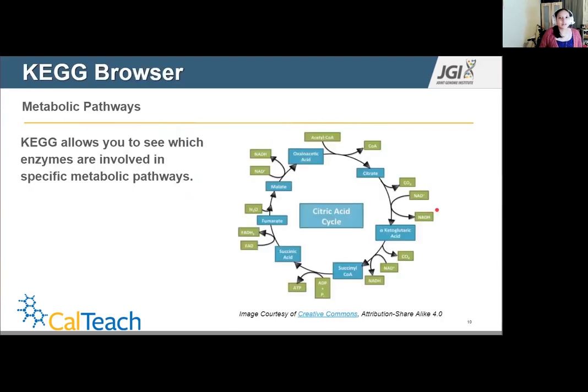This is where KEGG browser comes in. Galactose metabolism is an example of a metabolic pathway. Another example of a metabolic pathway is the citric acid cycle. And this is commonly taught in classrooms because it describes the chemical reactions required to release stored energy in cells. This is the backbone of why the mitochondria is the powerhouse of the cell. Metabolic pathways put in simple terms describes the enzymes used to gain energy from eating. This is where KEGG comes in, the Kyoto Encyclopedia of Genes and Genomes. The KEGG browser allows you to see which enzymes are involved in specific metabolic pathways.